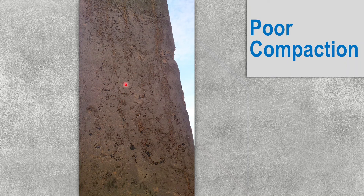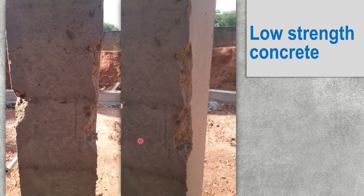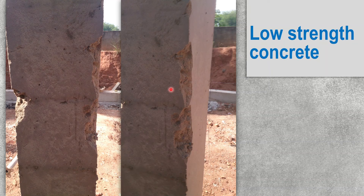Poor compaction is another issue. As you can see here, there are cavities, holes, and uncompacted concrete in the column, along with bleeding. This poorly compacted column affects the strength and durability of the concrete. In this figure, the column has spread in several parts, possibly due to low-strength concrete. There are cavities and voids, which could be caused by low compaction or issues in the concrete composition, or low-grade concrete being poured.